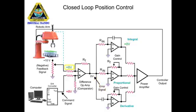The feedback signal is now equal to the command signal. Output voltages of the amplifiers are zero and the robotic arm motor stops turning.